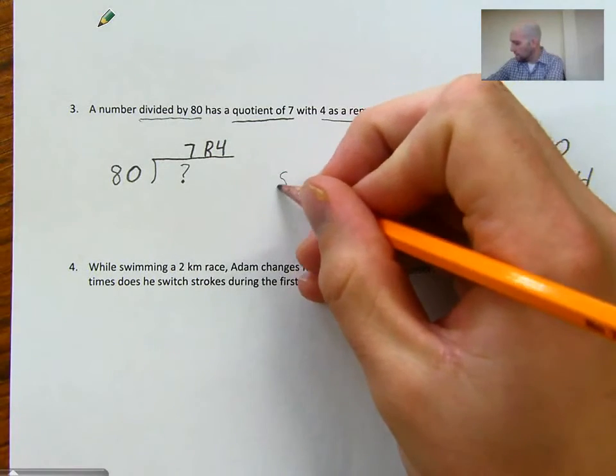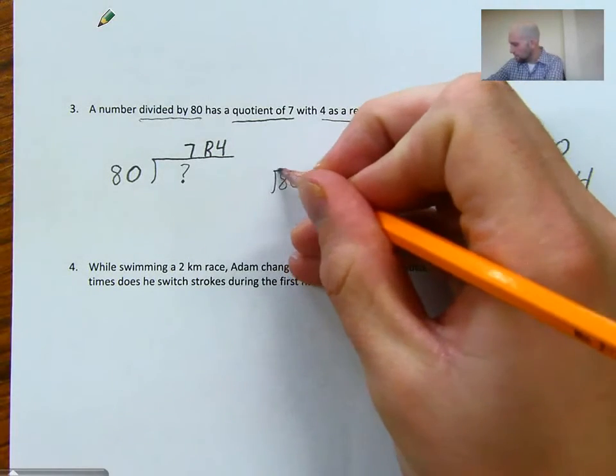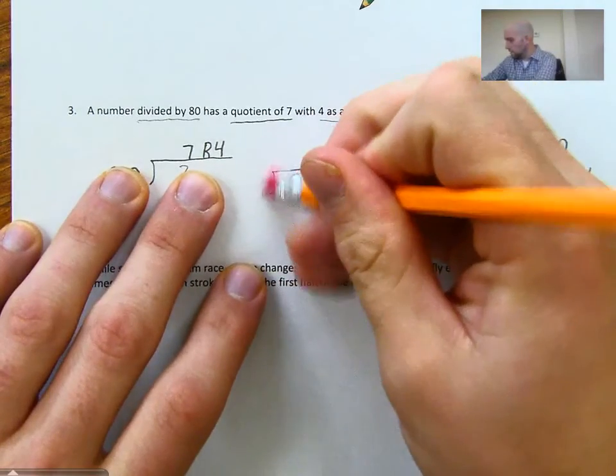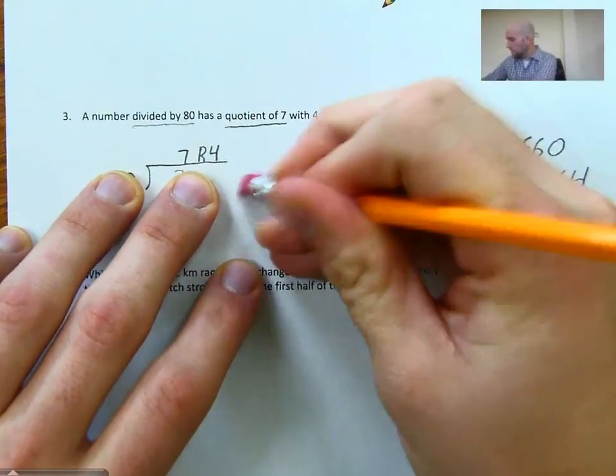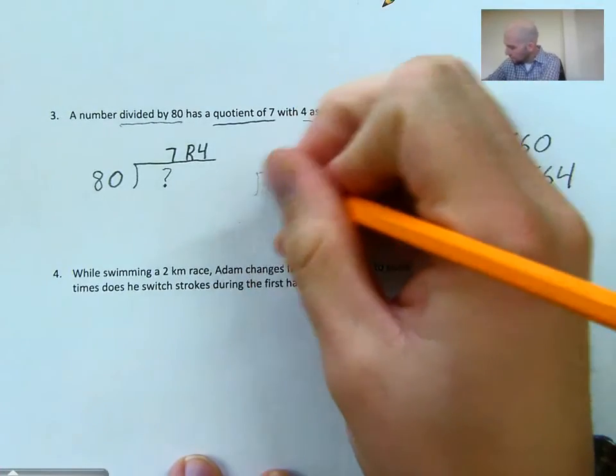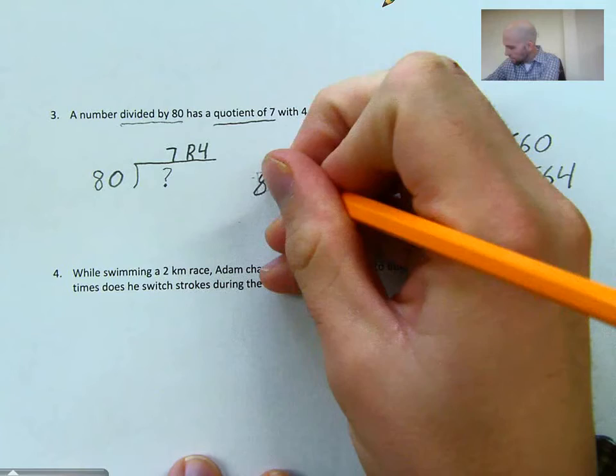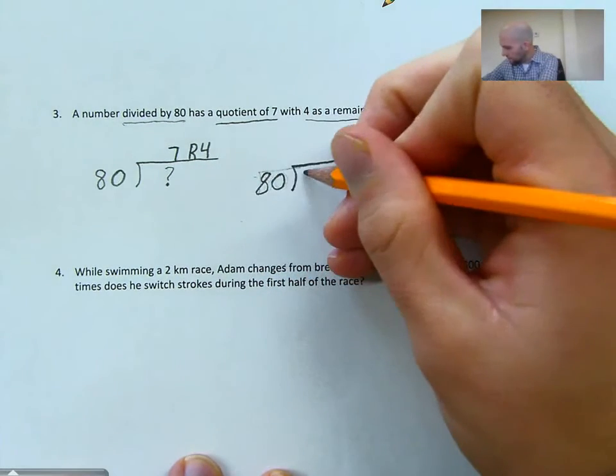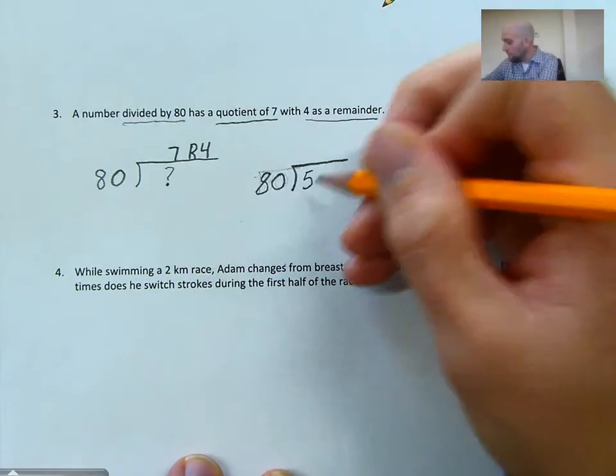Now, I can check to make sure that I'm correct by now dividing, rather than multiplying, because division is the inverse of multiplication. So I can do 80. Oh, see what I did there? 80 on the wrong side here. 80 goes into 564.